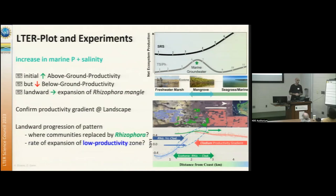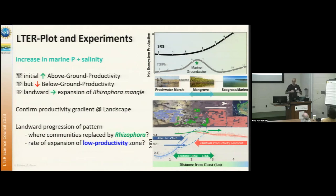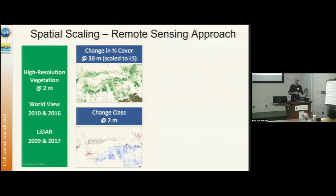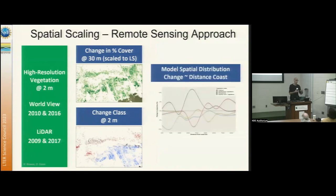That landward progression of the pattern is expected as sea level rise continues to increase — we predict that mangroves will move further inland, and at the same time, the low-productivity zone will follow as salinity gets too high, killing graminoids and reducing productivity. We used very high resolution 2-meter WorldView2 and LiDAR data, making two maps in 2010 and 2016, looking at class changes over time and scaling those changes to identify where cover percentage increased across the landscape, modeled as a function of distance to coast as a proxy for salinity.